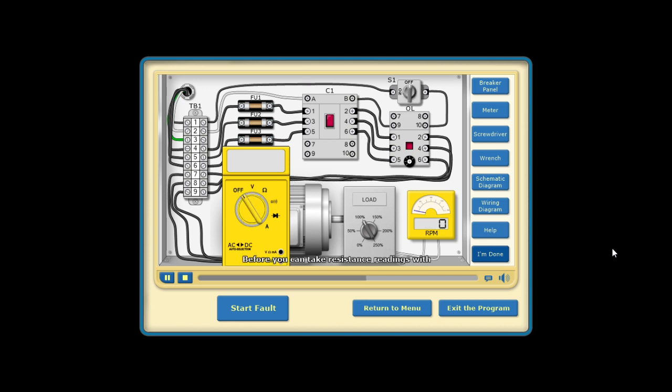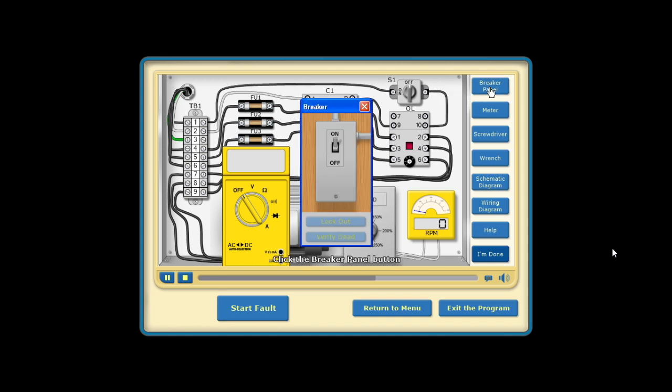Before you can take resistance readings with an ohmmeter, you must lock out the circuit. Click the breaker panel button, open the breaker, apply the lockout, and then verify the circuit is dead.